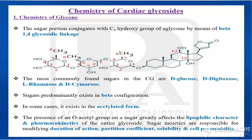In the chemistry section, we are dividing it into two parts: chemistry of glycone and chemistry of aglycone. Glycone is the sugar portion, and aglycone is the non-sugar portion. The glycone is the sugar attached to the third position of the steroid nucleus by means of a glycosidic linkage. The sugar portion conjugates with C3, that is the third carbon hydroxy group of aglycone, by means of beta 1,4 glycosidic linkage.